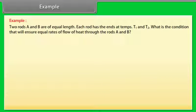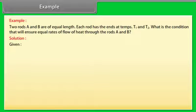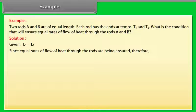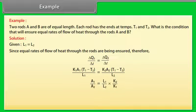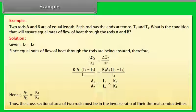Example: Two rods A and B are of equal length. Each rod has its ends at temperatures T1 and T2. What condition ensures equal rates of flow of heat through rods A and B? Given L1 = L2, for equal heat flow rates ΔQ1/Δt = ΔQ2/Δt, solving gives A1/A2 = (L1/L2)·(K2/K1). Since L1 = L2, A1/A2 = K2/K1. Thus the cross-sectional areas of the two rods must be in the inverse ratio of their thermal conductivities.